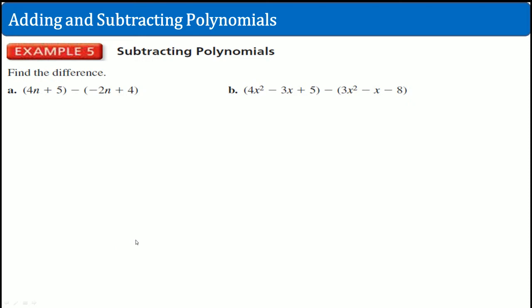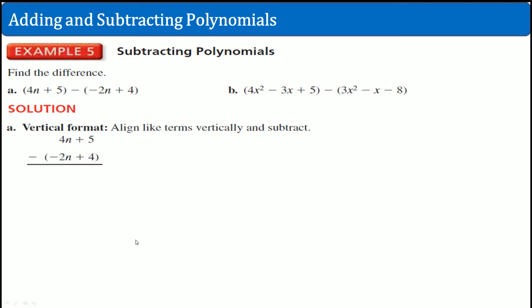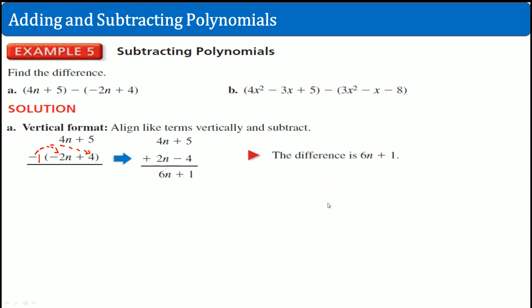Now let's do subtraction. Subtraction is done almost the exact same way. We have the top value as the first term, then we subtract the second term. Notice what we do with that minus — like before, we turn it into a positive by distributing. There's a negative 1 that is multiplied. That becomes 2n, and the negative 1 multiplied to the 4 becomes negative 4. So you come straight down: 5 minus 4 becomes 1, and 4n plus 2n becomes 6n. The difference is 6n plus 1. Notice a binomial minus a binomial is still a binomial.